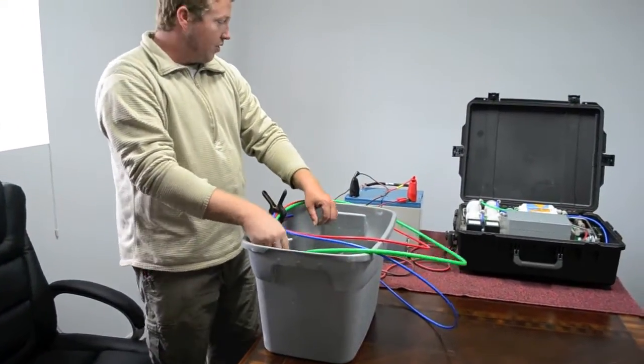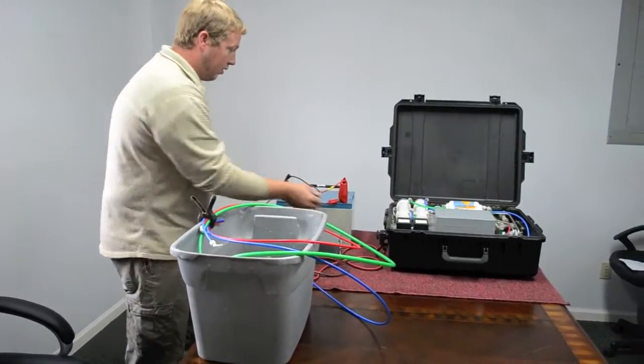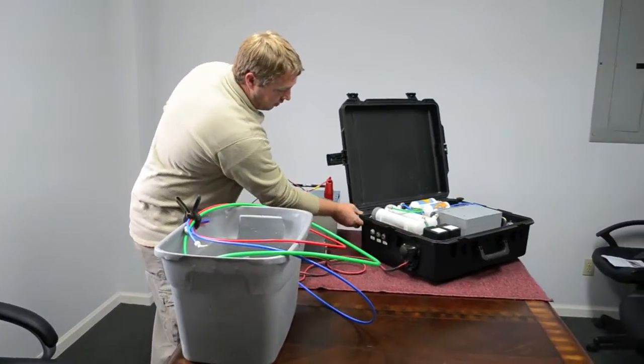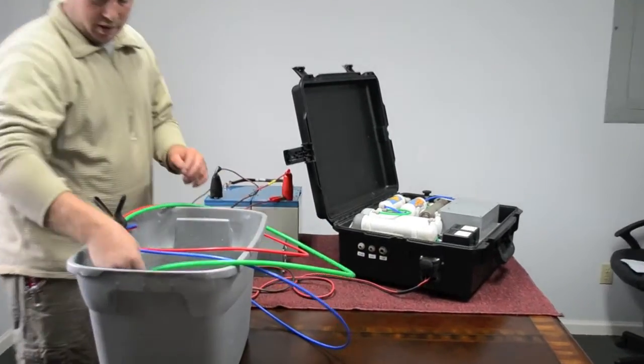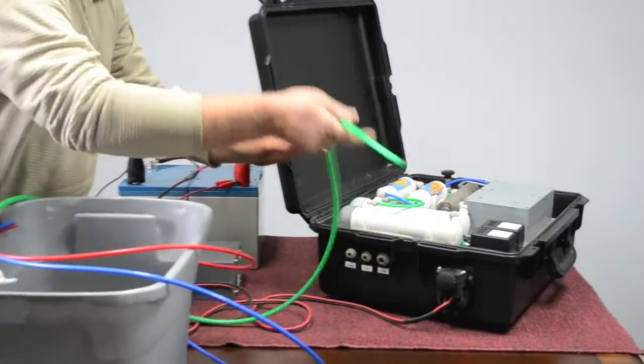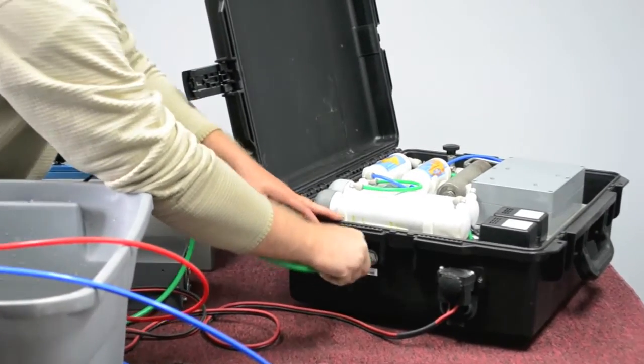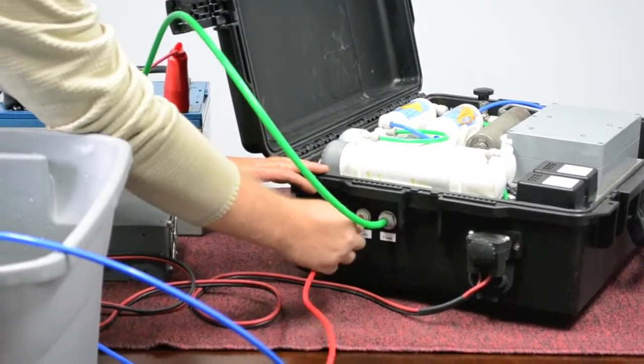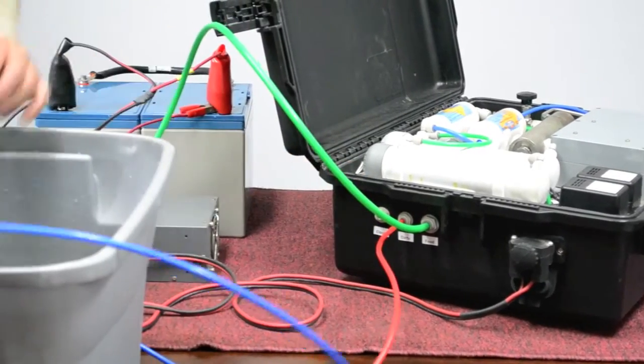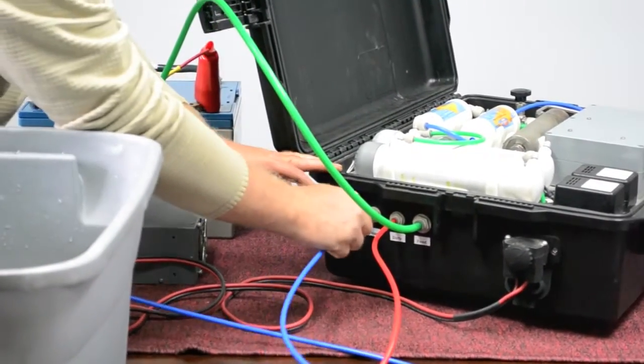Okay, we're going to connect our hoses to the unit. On the side we have it labeled feed, dirty, and clean. Feed is going to be your green hose. Red is going to be your dirty or concentrate. And blue is going to be your clean or pure water.